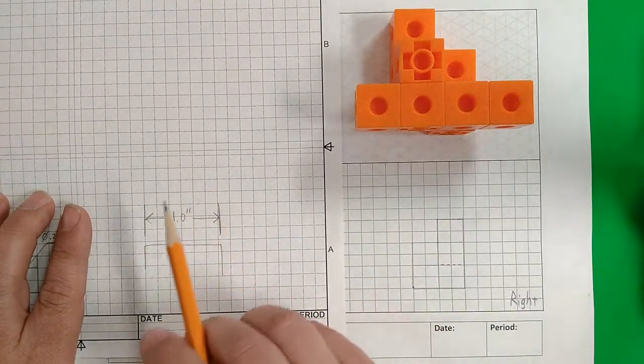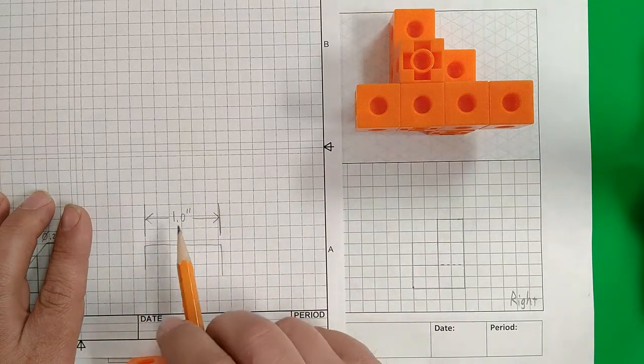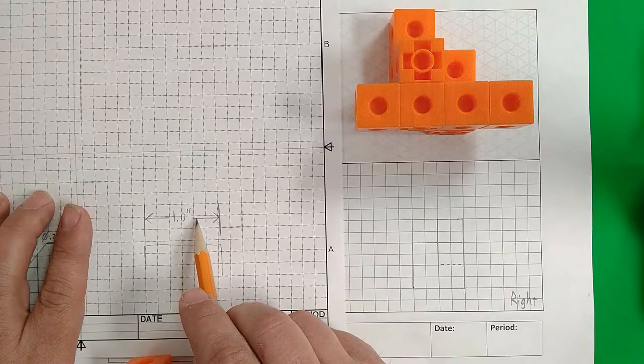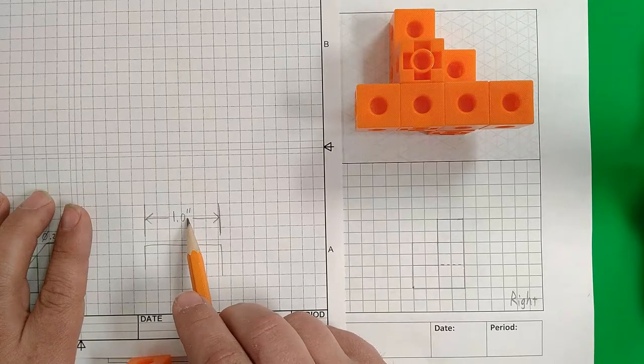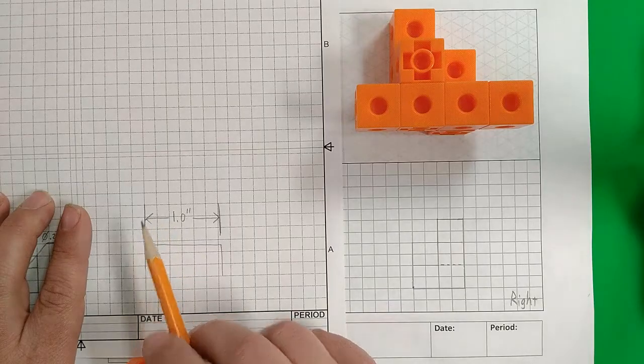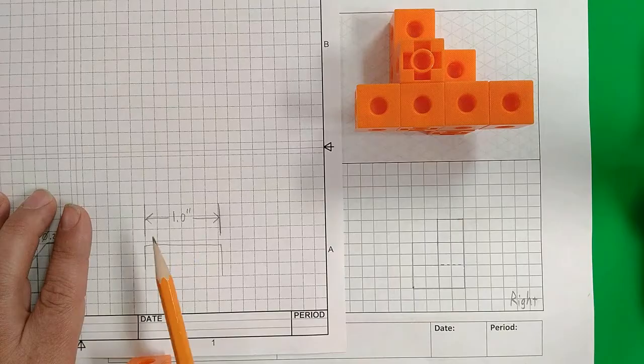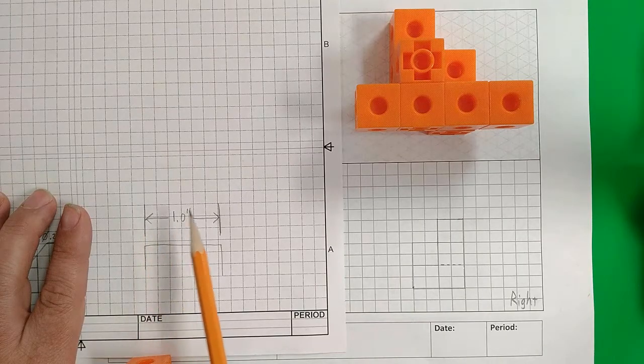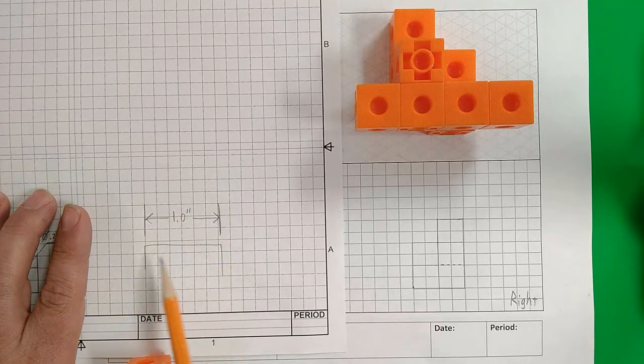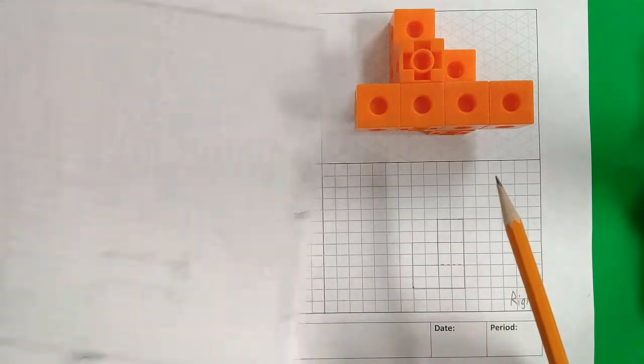I'm going to get a measurement and I'm going to put the measurement right in the middle between the extension lines and then I'm going to draw a dimension line going from the measurement to the extension line on both sides. The arrows help to show that this one inch measurement goes from this edge all the way to this edge of the object here. So that's how we're going to draw the actual dimensions.